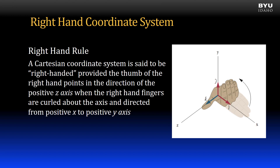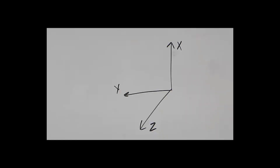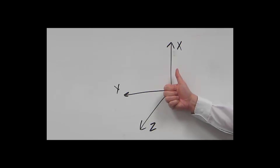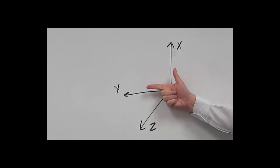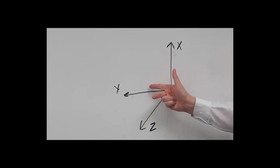This is easier to understand with a graphic example. The basic idea with the right-hand rule: first, you need to know your right from your left, and take your right hand. If you have your thumb pointing in the positive x direction and your index finger pointing in the positive y direction, then if you hold your middle finger at 90 degrees to those two, that points in the positive z direction.